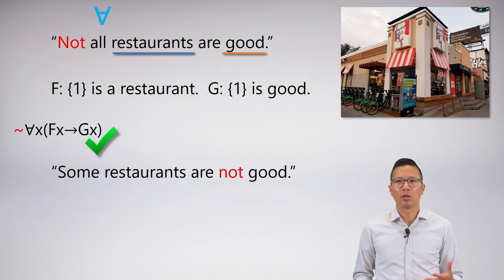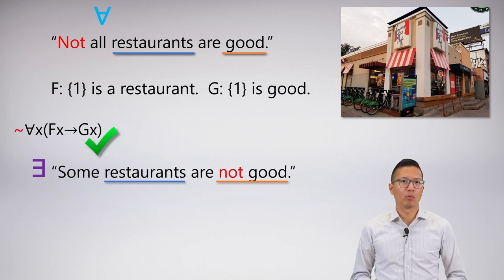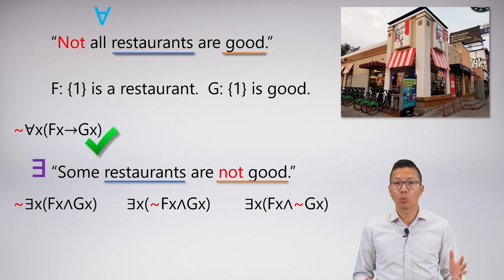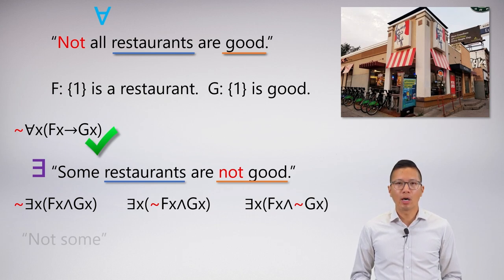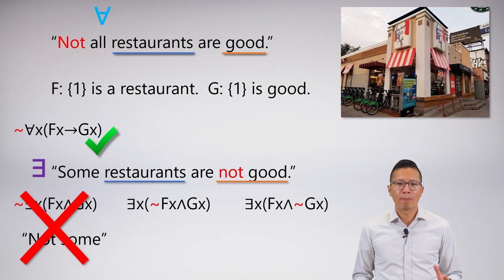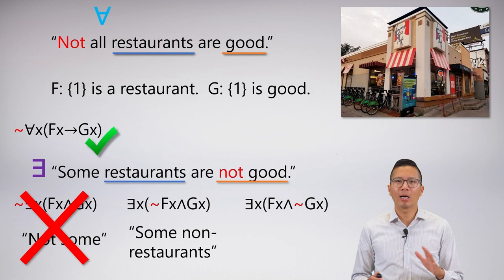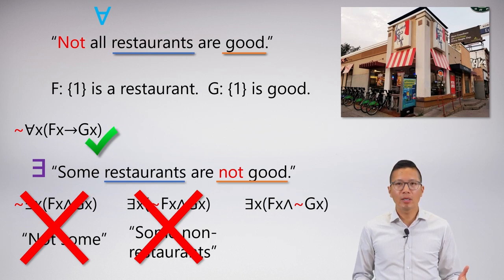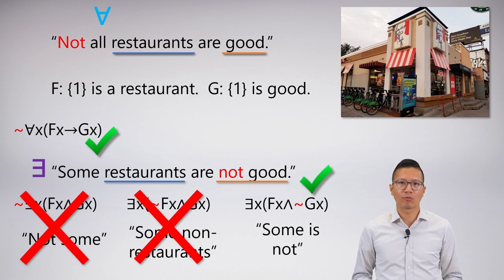How do I symbolize 'some restaurants are not good'? I can do the standard breakdown — this is an existential, same group-property division, and here are my three options for where to put the negation. The first says 'not some' — not the case that some restaurant is good — which doesn't capture the meaning. The middle option negates the restaurants, talking about some non-restaurant, but I want to talk about some restaurant, so that can't be it either. The last one says there is something that is a restaurant and is not good — 'some restaurants are not good.' That's the correct phrasing.